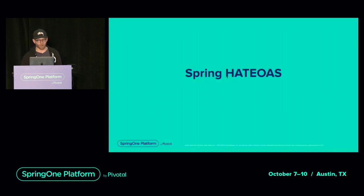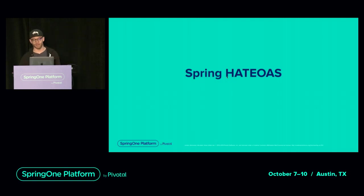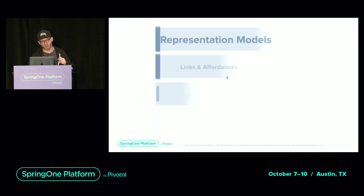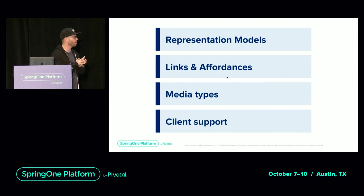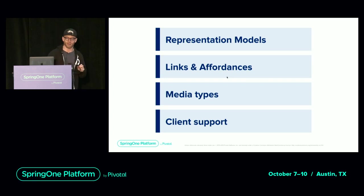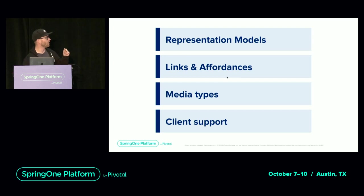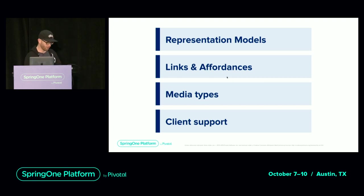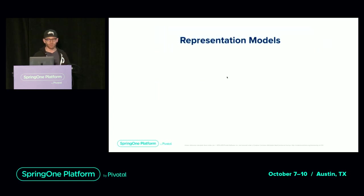So what are the Spring HATEOAS bits and pieces in play here? What kind of support do you get? There are four major areas: representation models, links and affordances, media type support, and some client-side support. I also have a tiny thing I'd like you to look at and potentially get involved with. Let's start with representation models.